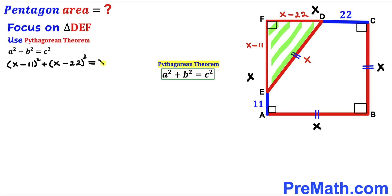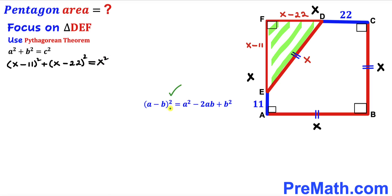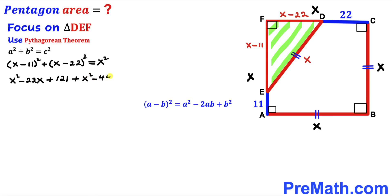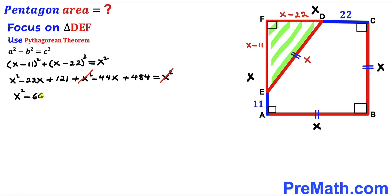This is going to be equal to X squared. Now let's recall the famous identity: (A minus B) whole squared equals A squared minus 2AB plus B squared. Applying this identity to both binomials on the left hand side, we get X squared minus 22X plus 121, plus X squared minus 44X plus 484, equals X squared. Canceling X squared terms and combining like terms gives us X squared minus 66X plus 605 equals 0.